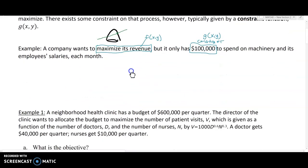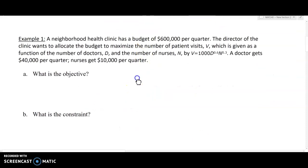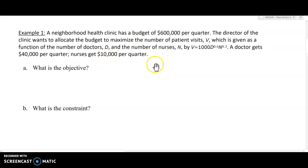To better understand this, let's look at an example. A neighborhood health clinic has a budget of $600,000 per quarter. The director of the clinic wants to allocate the budget to maximize the number of patient visits V, which is given as a function of the number of doctors D and the number of nurses N by V = 1000D^0.6 N^0.3.